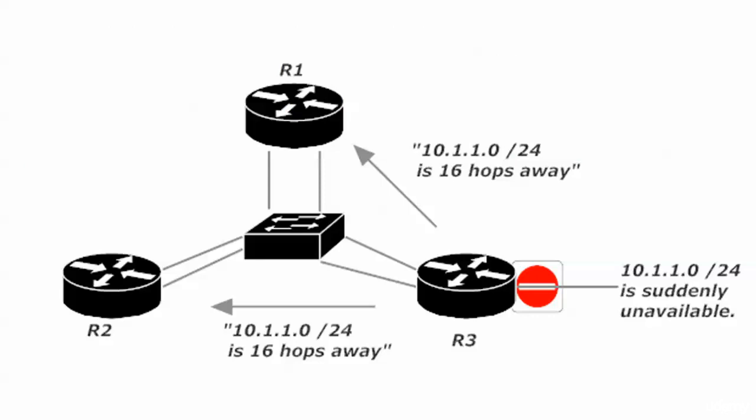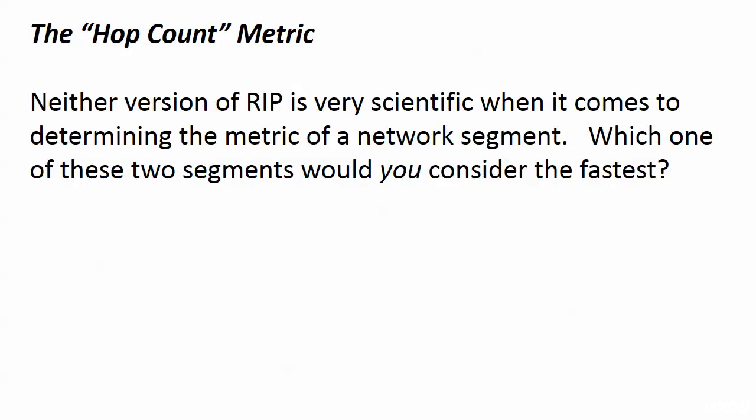Router 3 tells routers 1 and 2 that the network is 16 hops away. Routers 1 and 2 receive that update and take the route out of their tables and stop advertising it. As a result of that poisoned update, router 2 will no longer advertise the route to router 1 or vice versa. That's why route poisoning can be a force for good — it sounds evil, but it is indeed a force for good.